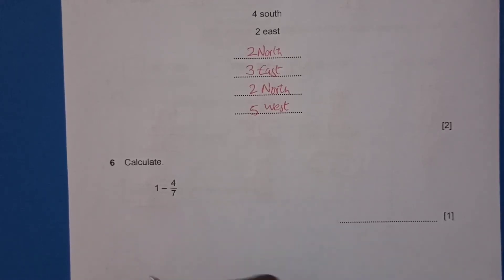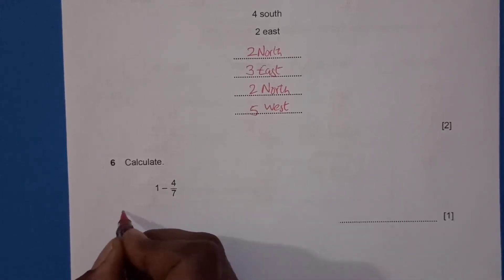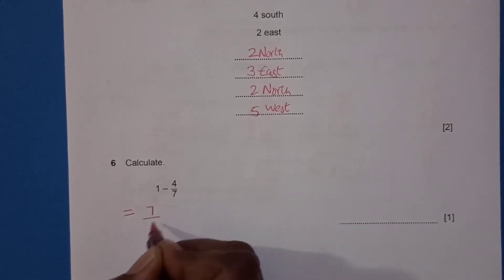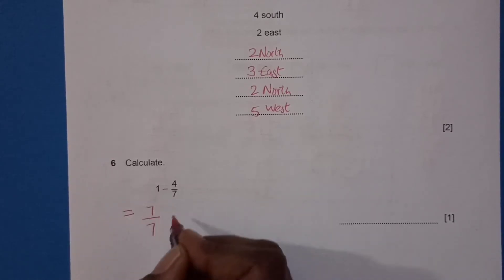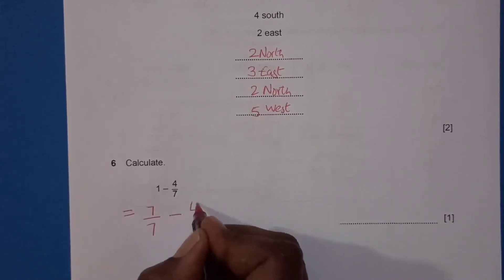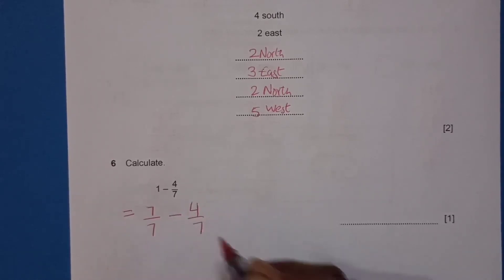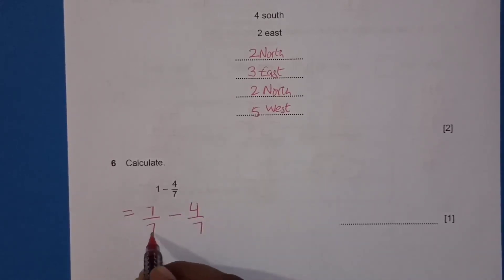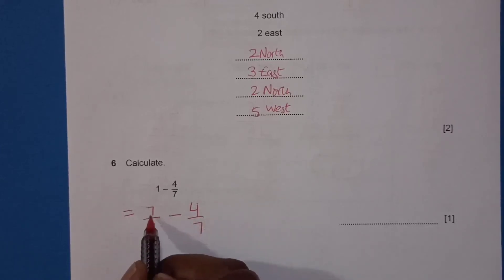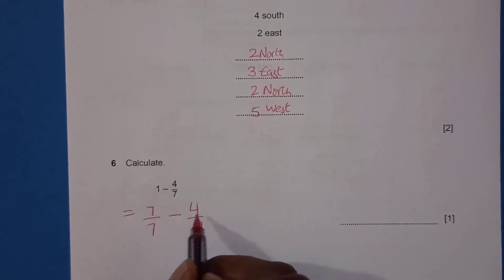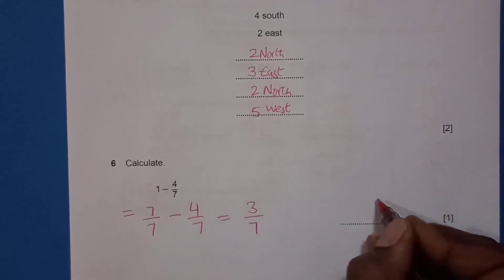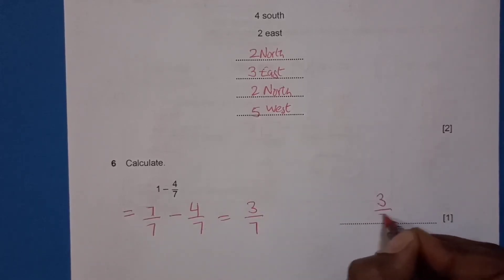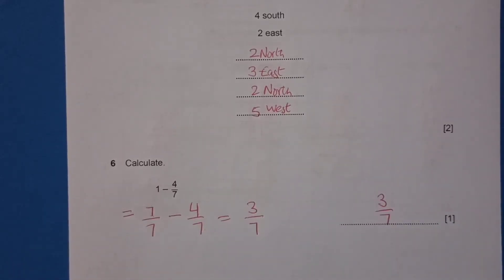Question 6: Calculate 1 minus 4 over 7. As you know, 1 can be written as 7 over 7. So 7 over 7 minus 4 over 7 — the denominator is the same, so subtract directly: 7 minus 4 equals 3. The answer is 3 over 7.